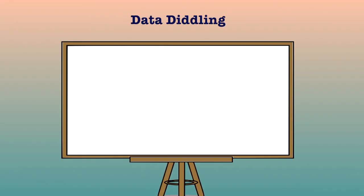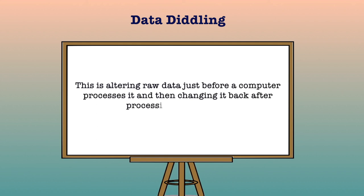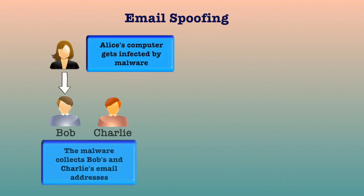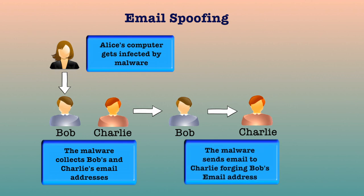Data diddling — it is a practice of changing the data before its entry into the computer system. Often the original data is retained after the execution on the data is done. For example, the DA or basic salary of a person is changed in the payroll data for pay calculation. Once the salary is calculated and transferred to his account, the total salary is replaced by his actual salary in the report. Email spoofing — it is a process of changing the header information of an email so that its original source is not identified, and it appears to the person at the receiving end that the email had originated from a source other than the original source.